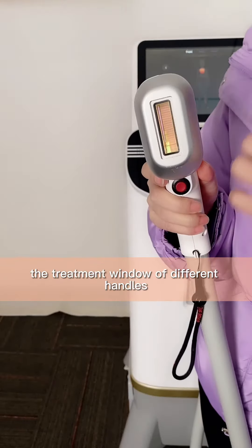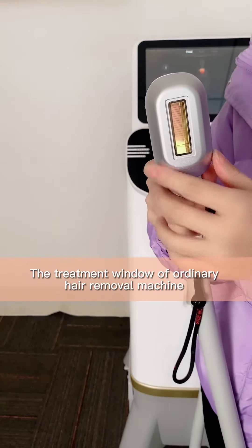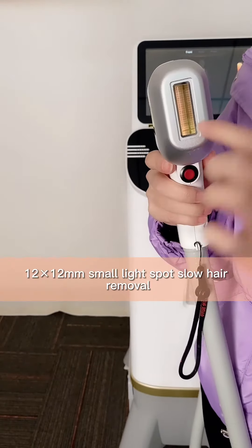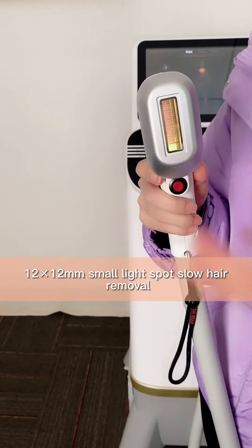The treatment window of different handles. The treatment window of ordinary hair removal machine is only 14x14. It has a more limited scope and slower hair removal.